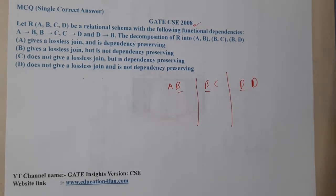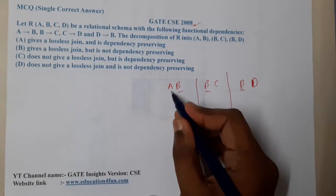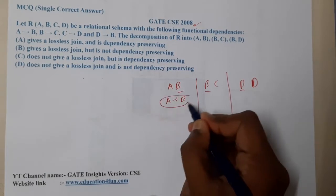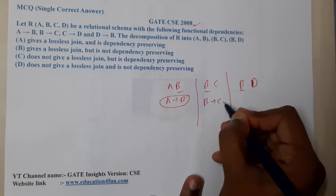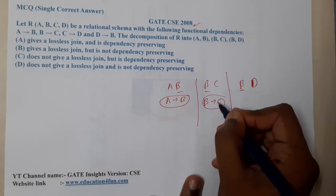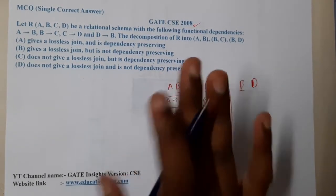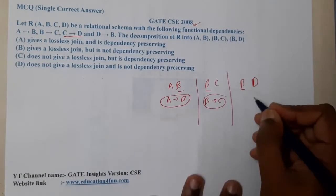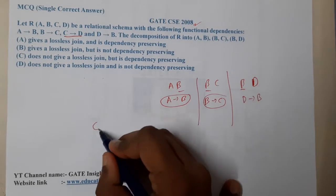Now let us discuss dependency preservation. The first dependency a→b will appear in AB, so it is safe. b→c will appear in BC, so it is safe. c→d will not directly appear in any relation, so let us set that aside for now.